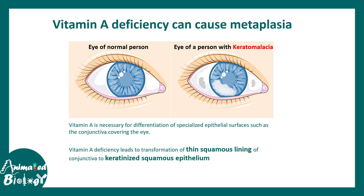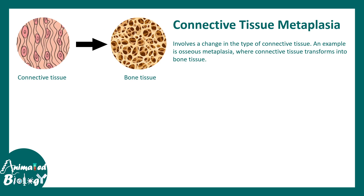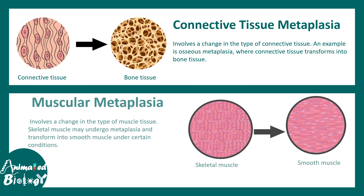Another example of nutrient deficiency-induced metaplasia is keratomalacia, where vitamin A deficiency leads to hardening and thickening — a transformation of the thin squamous lining of the conjunctiva into keratinized squamous epithelium. There are also connective tissue metaplasia where connective tissue becomes bone-like, and muscular metaplasia where skeletal muscle becomes smooth muscle.